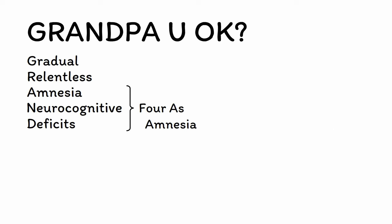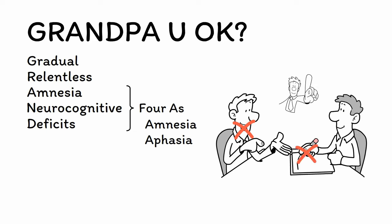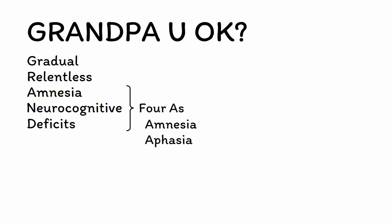The next A is for aphasia, which is a loss of language abilities, including not only speaking but reading and writing as well. This is often first noticeable as an expressive aphasia, with patients having word-finding difficulties or otherwise finding it hard to express exactly what they want to say. As the disease progresses, receptive aphasia often develops as well, with patients having trouble understanding what's being said to them. In severe forms of Alzheimer's disease, the ability to communicate can be lost entirely.